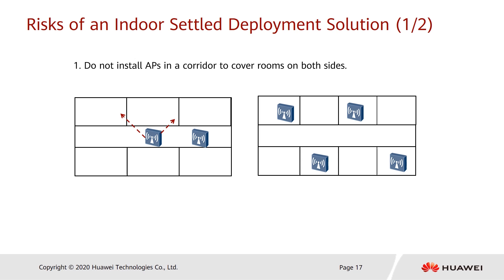Finally, let's talk about the risks of a network planning solution in an indoor settled scenario. First, do not install APs in a corridor to cover rooms on both sides. In some projects, customers may limit the number of APs and deploy them in corridors — but this has great risks, as wireless signals must cross multiple walls and will be greatly deteriorated. Interference may also occur between APs in a narrow corridor. Therefore, the W-shaped deployment mode is recommended, though one AP can cover multiple rooms if the wall material allows.